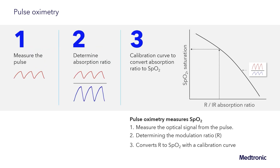With that, we have covered three important aspects of pulse oximetry. First, you have to measure the pulse. Once you measure the pulse, you are able to determine the absorption ratio of the red and infrared LEDs. From that absorption ratio, you are then able to convert to an SpO2, or a saturation.